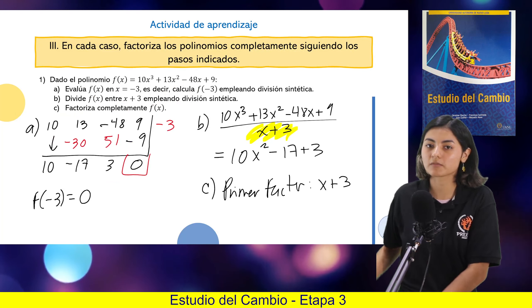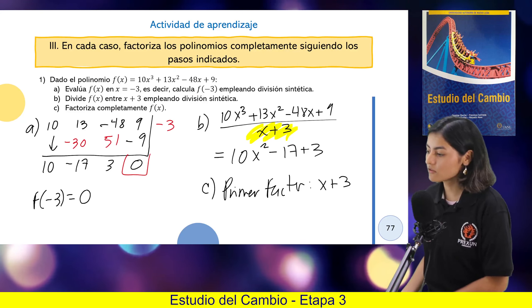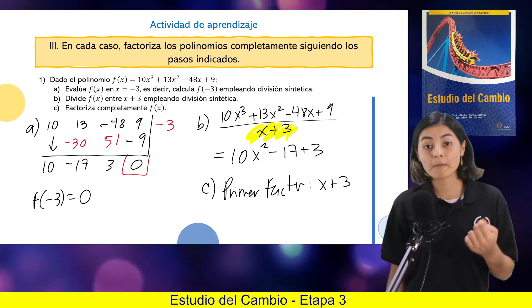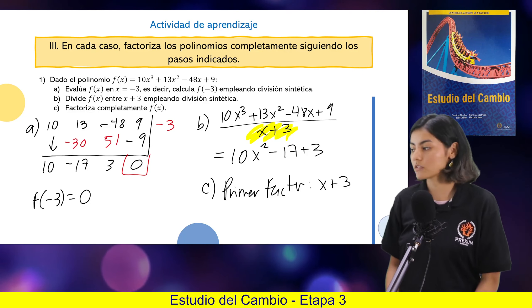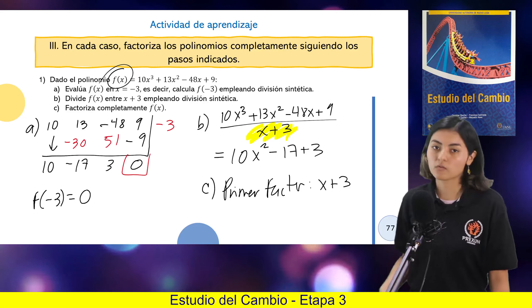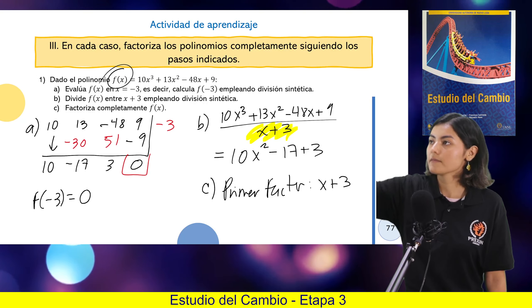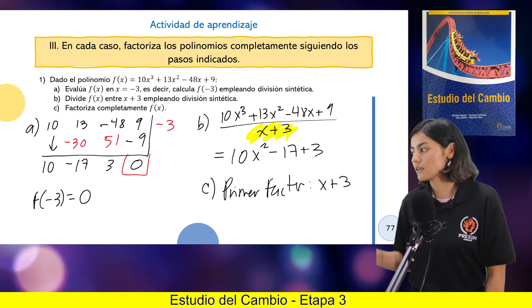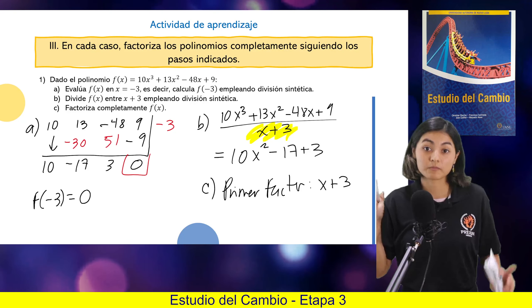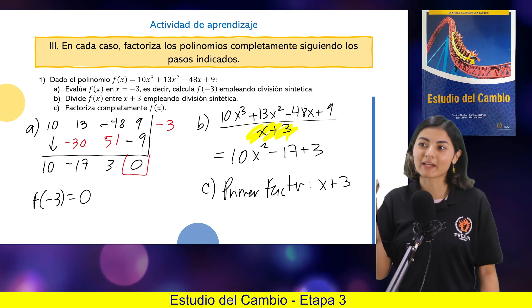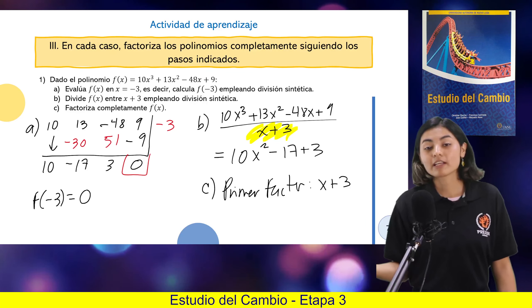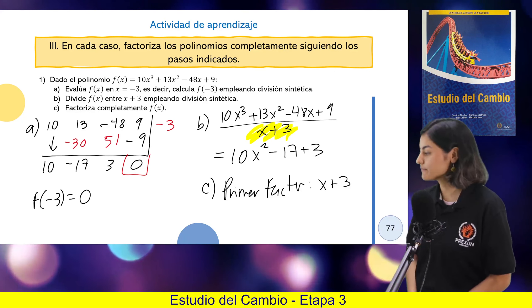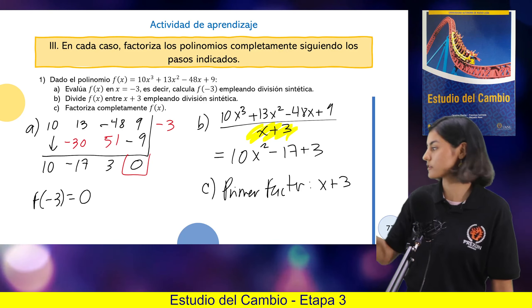A eso se refiere con que sean factores, porque ahora ya lo podemos factorizar con eso. Entonces, todas las raíces que encontremos de nuestra función, es decir, aquellas que me hacen 0 al evaluarla, si ustedes evalúan aquí el 1 quinto o el 2 tercios les va a dar 0. Entonces, todas esas que nos dan 0 son las raíces. Y ya cuando los pasamos del otro lado de una igualdad, esos ya van a ser los factores. Y los factores me factorizan mi función.